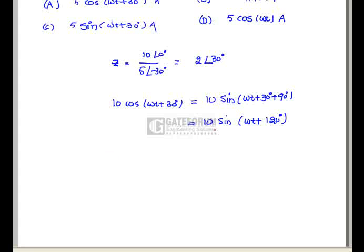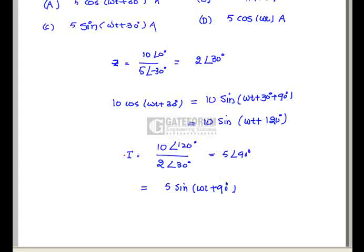For this input, the current is I = 10∠120° / 2∠30° = 5∠90°. This can be written as 5sin(ωt + 90°). Since the voltage is in sine form and the impedance was calculated from the sine expression, this is equivalent to 5cos(ωt). So option D is correct.